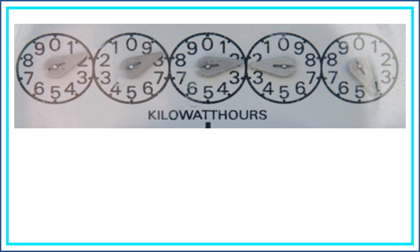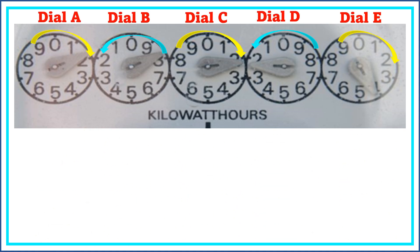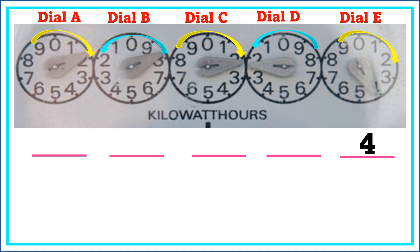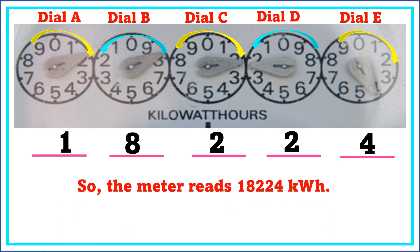Another example: read and interpret the dials on the meter as presented. The reading on dial E is four. On dial D, the answer is two. On dial C, the correct answer is two. The reading in dial B is eight. And in dial A, the correct answer is one. So the meter reads 18,224 kilowatt-hours.